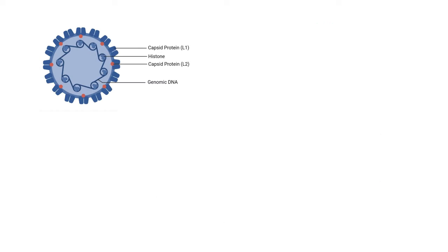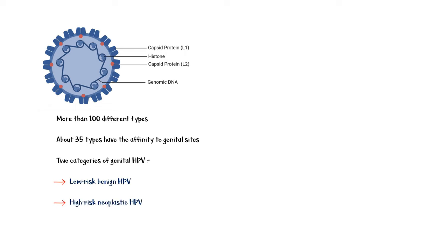Human papillomavirus is a double-stranded DNA virus which has more than 100 different types. Out of these, about 35 types have the affinity to genital sites. There are two categories of genital HPV: the low-risk benign type and the high-risk neoplastic type. Low-risk type 6 and 11 are responsible for most genital warts, accounting for more than 90% of cases. Warts caused by these strains are least likely to be transformed into malignancy.